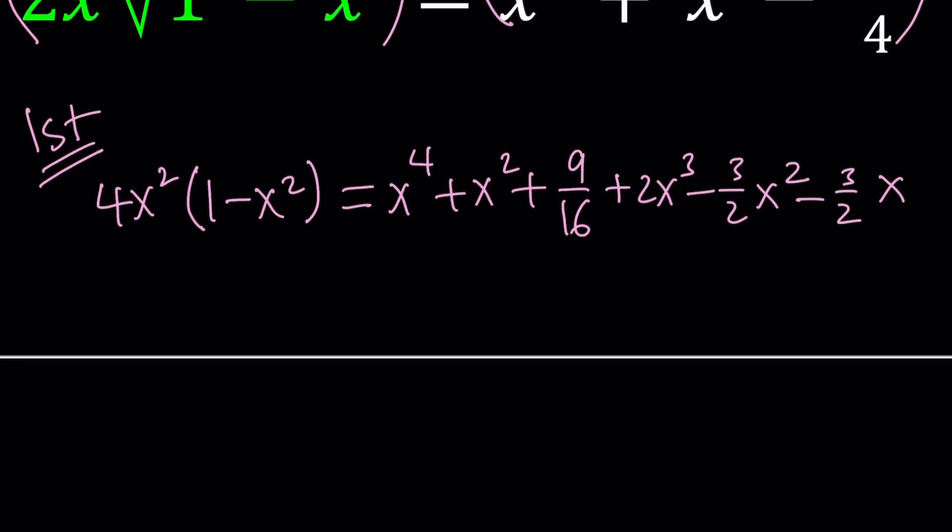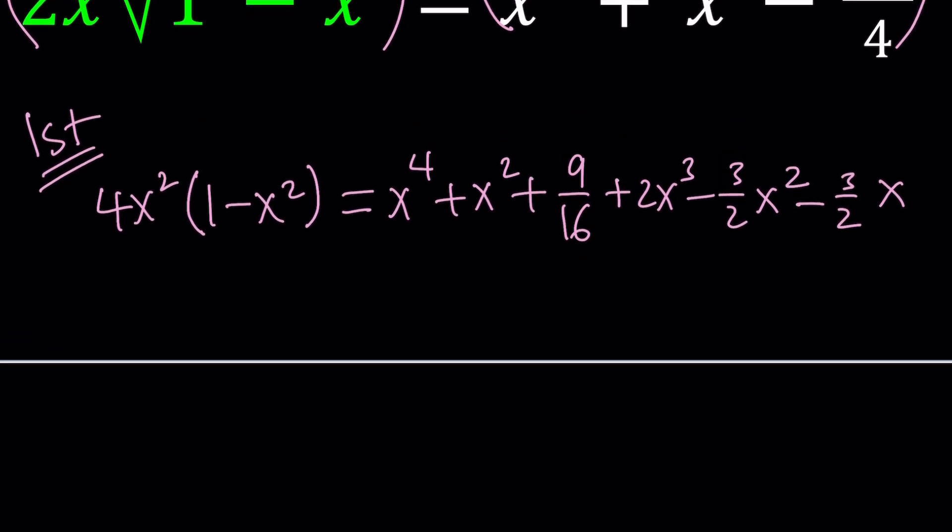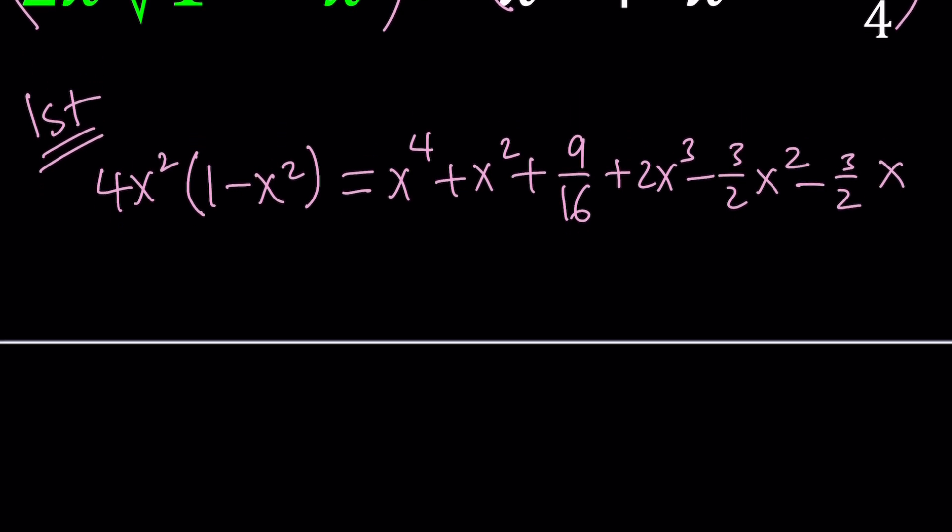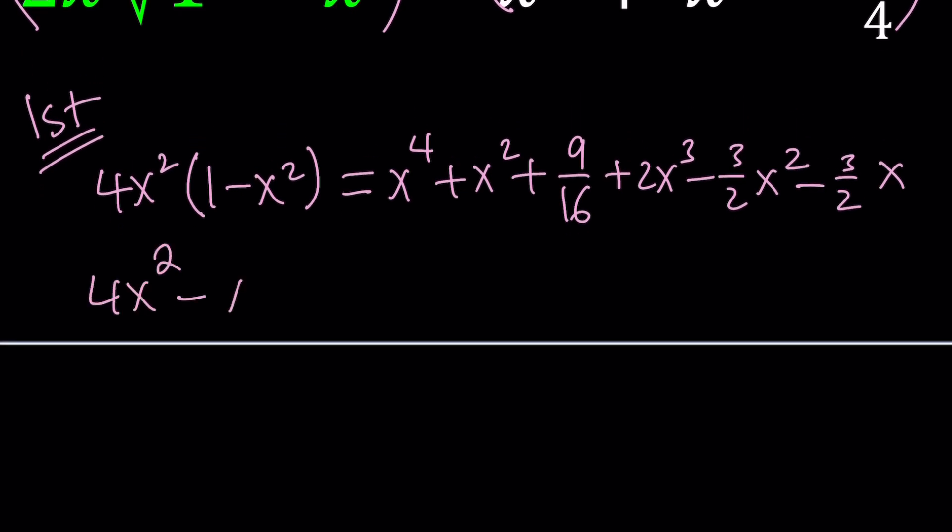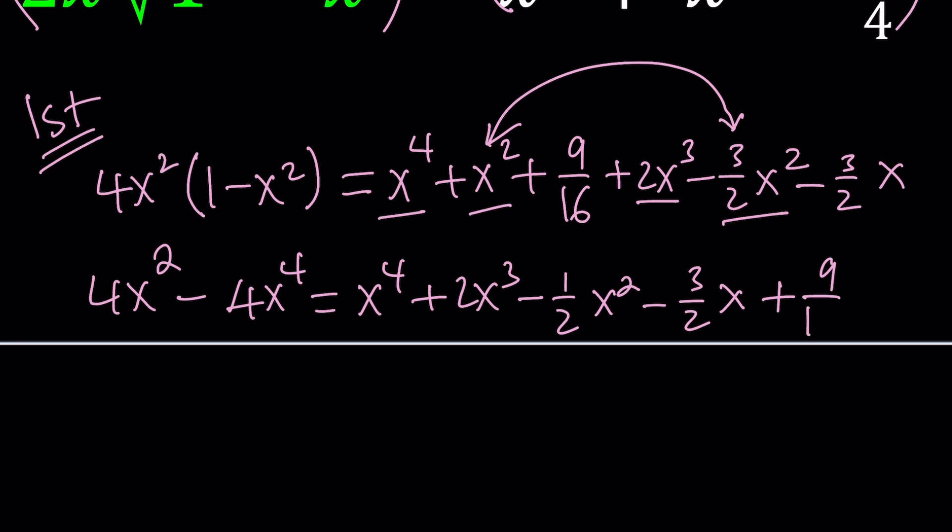Now let's go ahead and simplify this as much as possible and see if we can solve the resulting quartic. We got 4x squared minus 4x to the fourth power equals x to the fourth power plus 2x cubed. And now I need to add these two like terms. That's going to give me minus 1 half x squared, and then we have the minus 3 over 2x, and then finally 9 over 16.